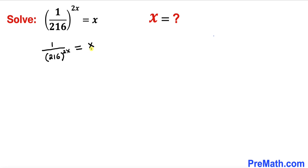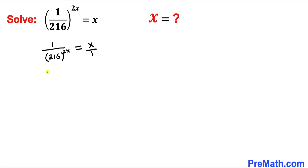Let me go ahead and tweak the right-hand side. I can write x as x divided by 1, and now let's flip both sides over — we are going to invert them. So the left-hand side becomes 216^(2x) divided by 1, equals 1/x on the right-hand side.